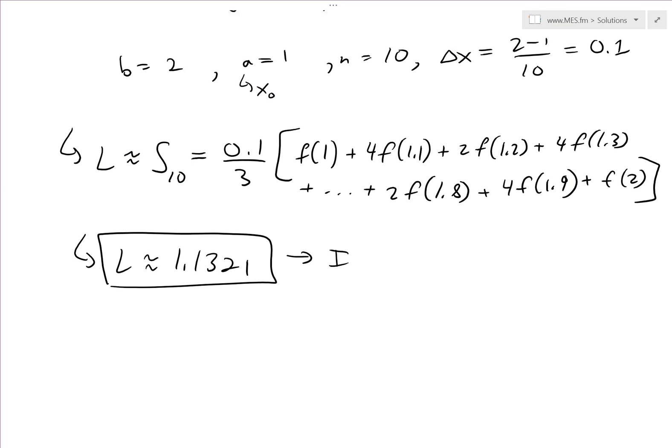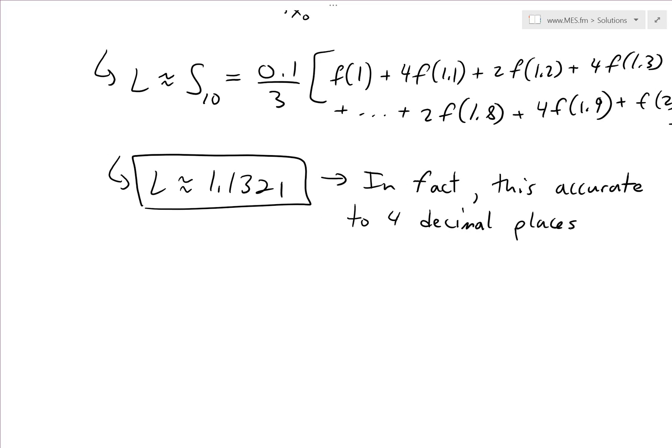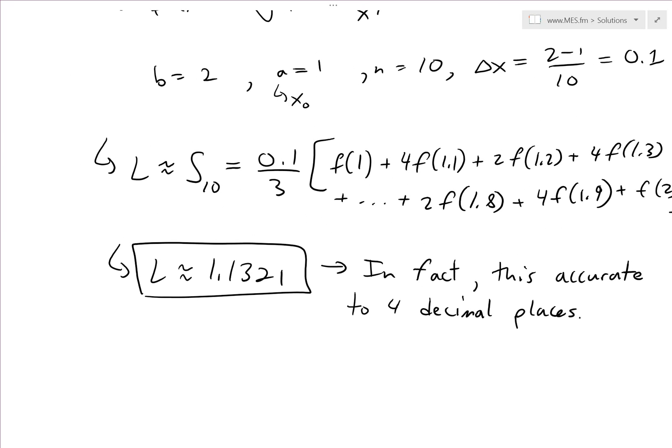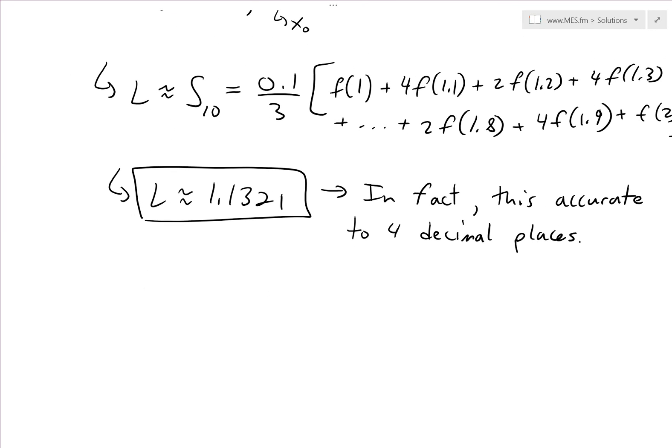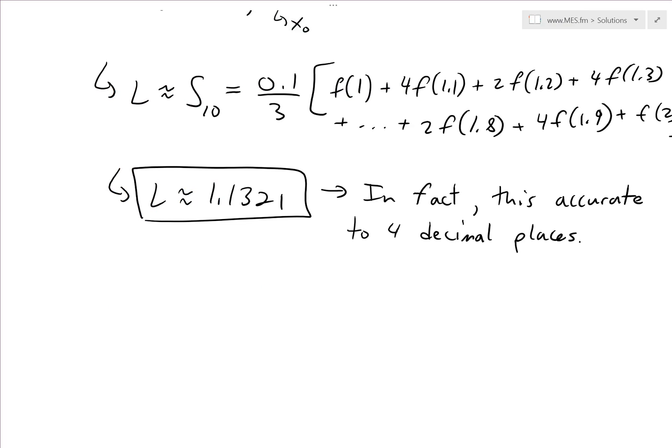And in fact, if you use a more advanced computer algebra system, you'll find out that this Simpson's rule, in fact, for this case, is accurate to four decimal places. In fact, this is accurate up to four decimal places. If you were to use a more advanced approximation method or a computer, et cetera, to go more in depth into it, you'll see that this number is accurate up to it. And then it strays away from the 0, 3, 8, et cetera. So this is accurate up to here.